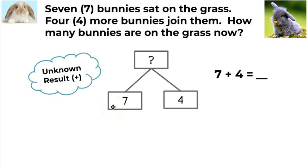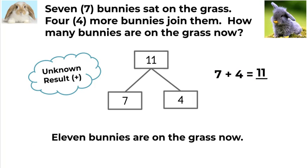Seven bunnies to start. Four bunnies join them. These are both parts, and I'm looking for the total. The result for addition is the total. When I add those up, seven plus four, I can either count on from seven, count on four, or if I know my facts, I just know that seven plus four is eleven. So eleven bunnies are on the grass after four bunnies join the seven.